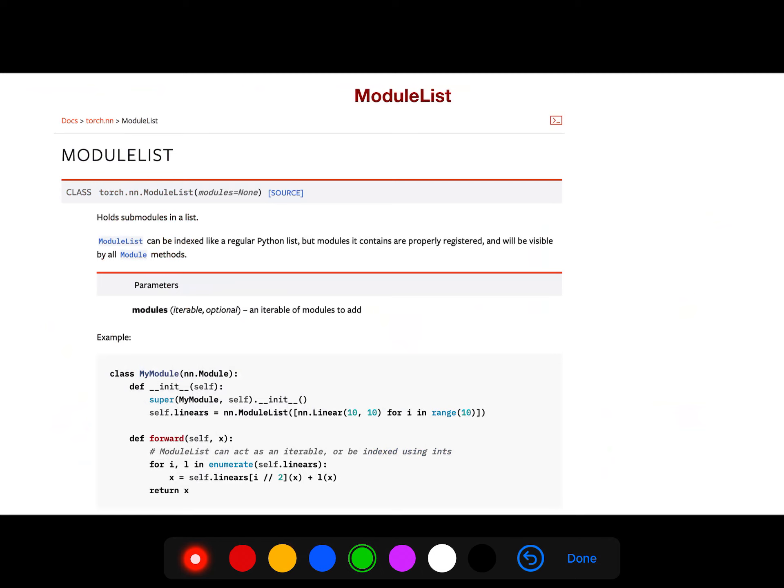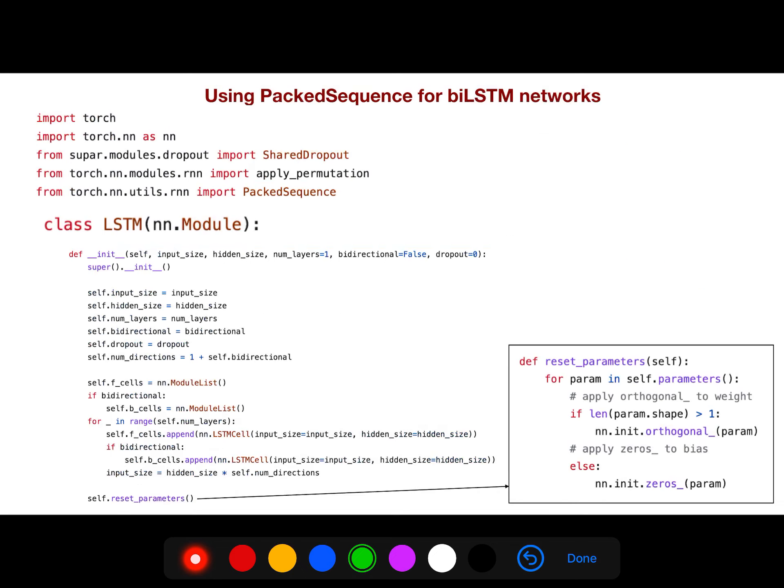And the module list is, you know, in Python we use lists. Some lists, for example A and the appended and all things. Here for modules, it's a list of modules. In PyTorch you use module list. For example here we have 10 different neural networks. It's a list of neural networks.